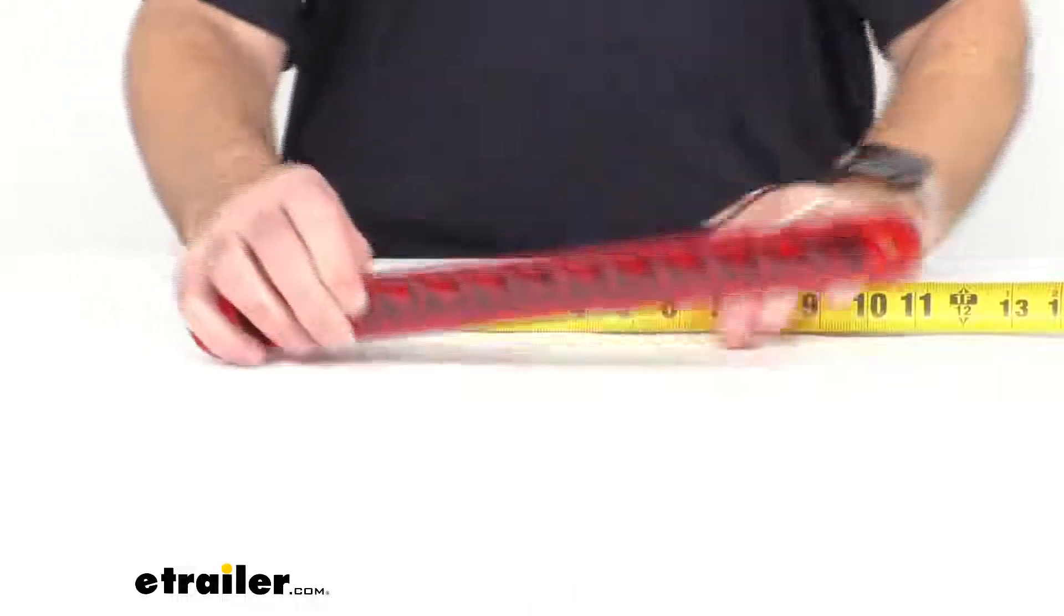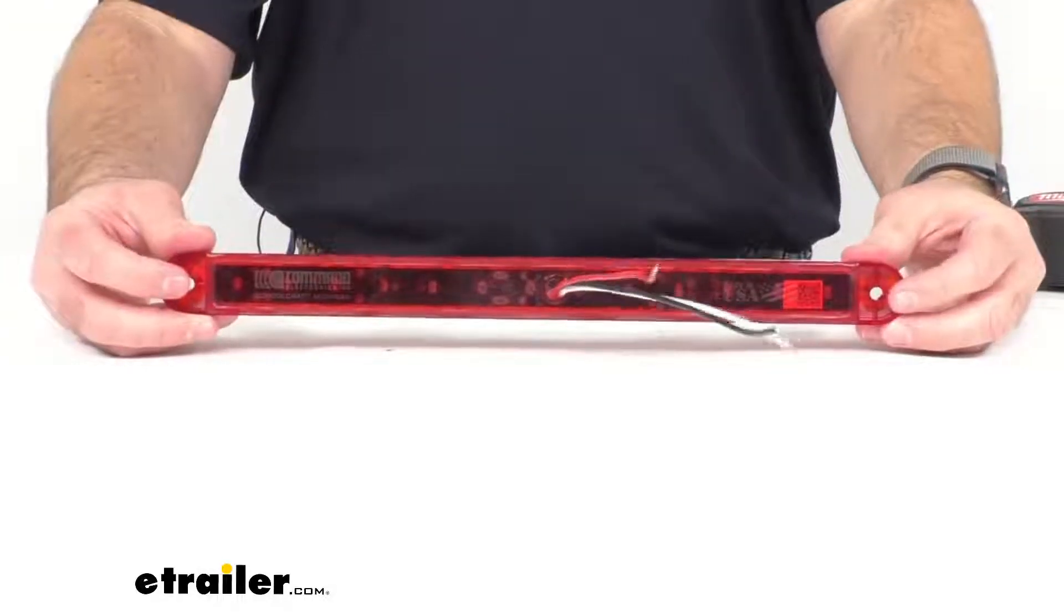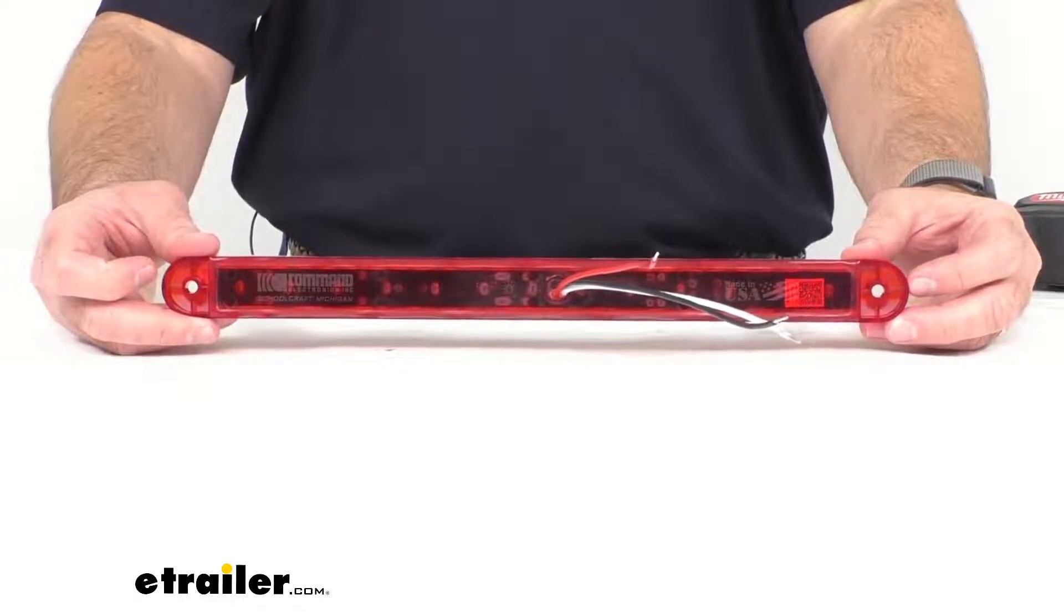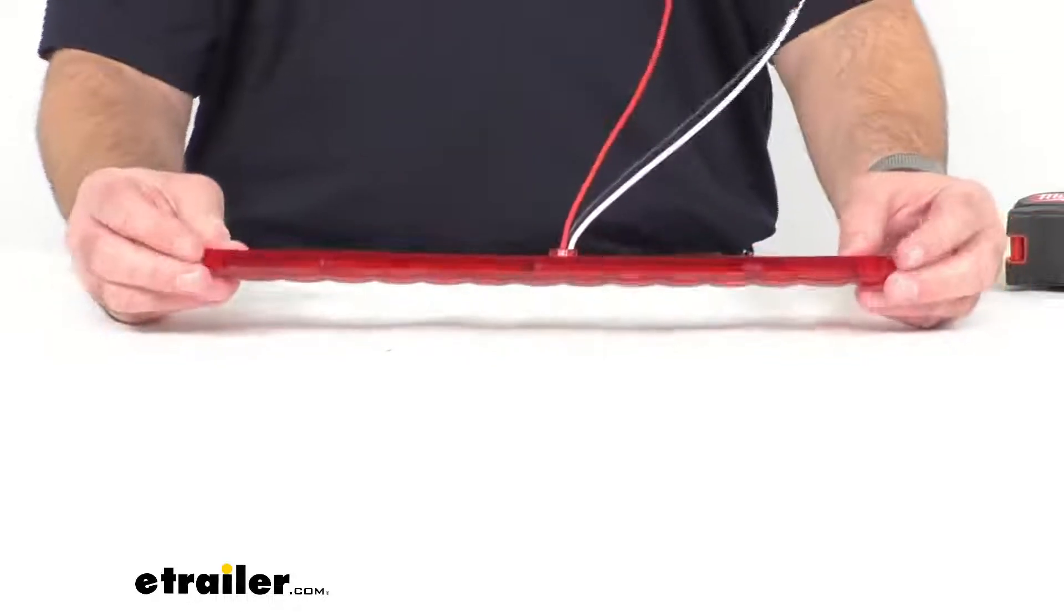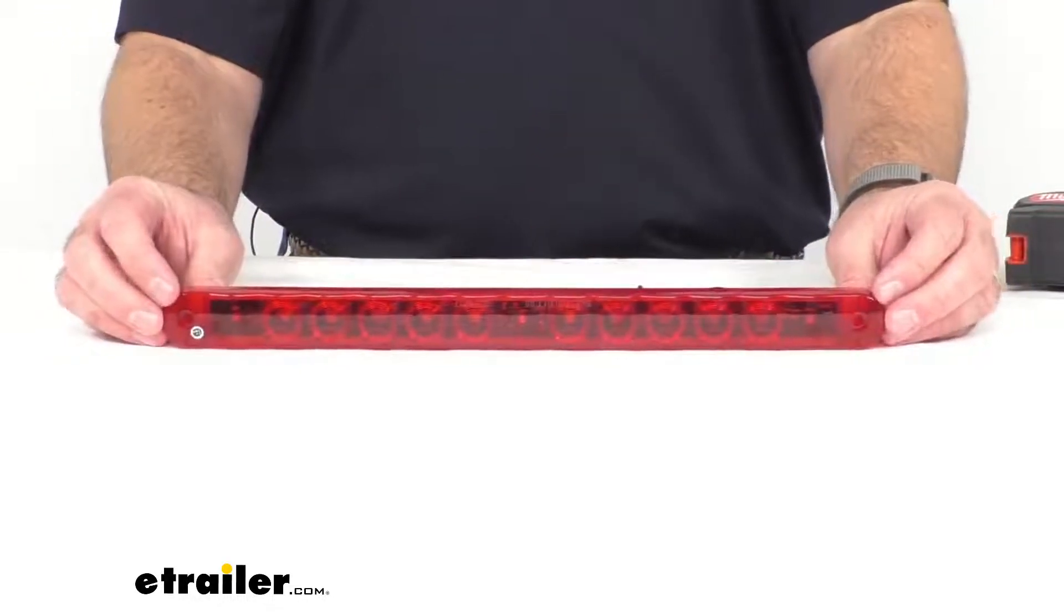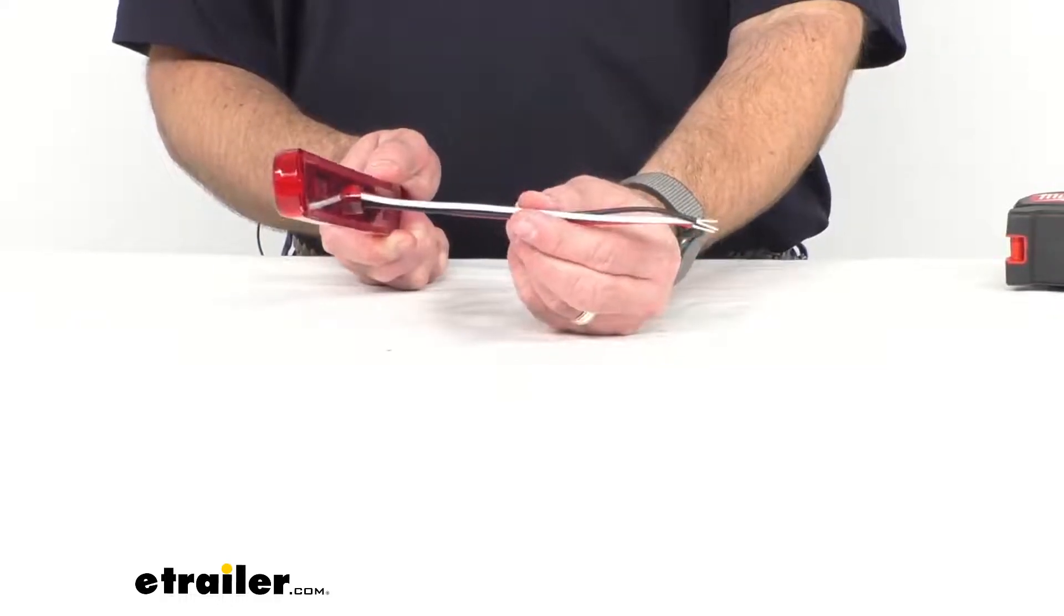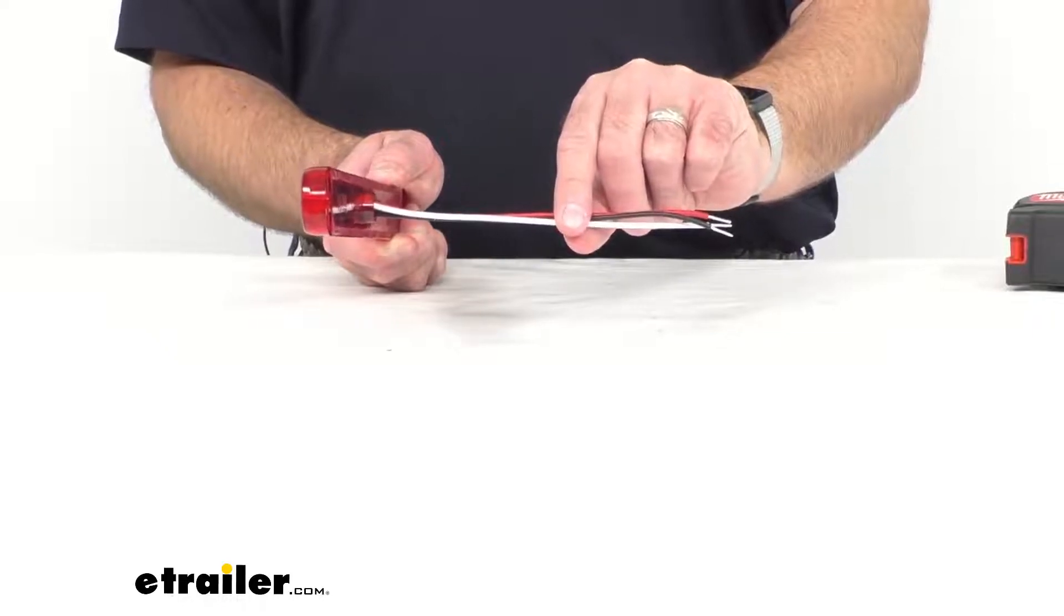Now, the distance between the mounting holes is going to be right at 13 and 13 sixteenths inches, and you're going to have about seven inches of wire lead length on this light.